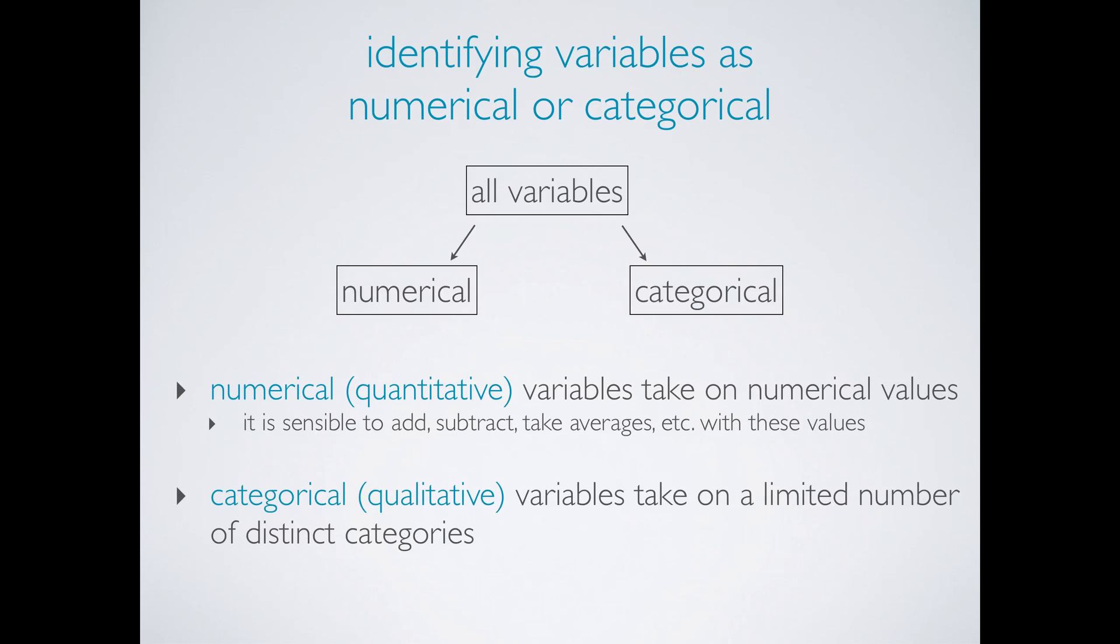Categorical or qualitative variables take on a limited number of distinct categories. These categories can be identified with numbers. For example, it is customary to see the gender variable coded as zero for males and one for females, but it wouldn't be sensible to do arithmetic operations with these values. They are merely placeholders for the levels of the categorical variable.